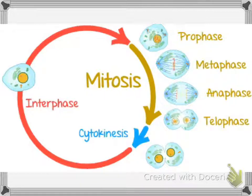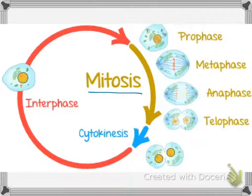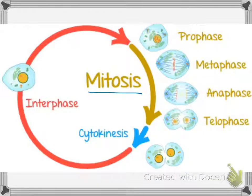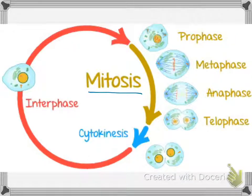Mitosis is the duplicating of a cell — taking one cell, copying the chromosomes inside of it, and then splitting that cell into two cells. There's a lot more to that process, but that's the basic idea. The first step is prophase. In prophase, the DNA — the chromosomes — are going to be condensing into the X-shaped chromosome shape. The nuclear membrane is dissolving, and a lot is going on as the cell prepares to divide.